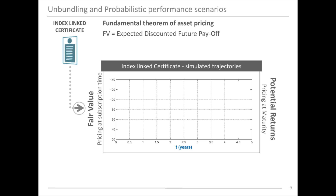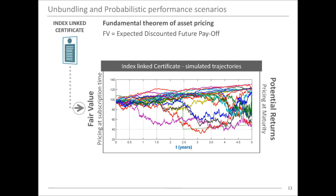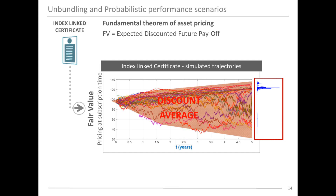Concretely, this means we simulate possible trajectories describing the value of the product over time — say five years. You can have one trajectory, a blue line, a green line, a purple line, and so on. By building this picture and computing the probability-weighted average of the discounted outcomes, you get the fair value. This is the full picture in terms of risk assessment — a concrete application of the fundamental theorem of asset pricing.